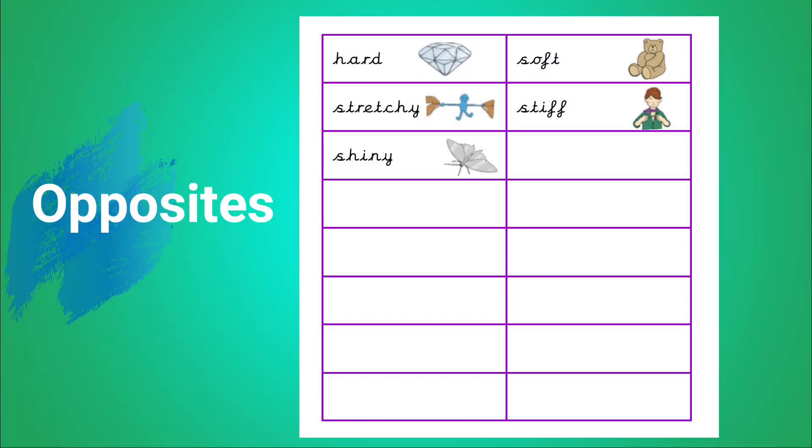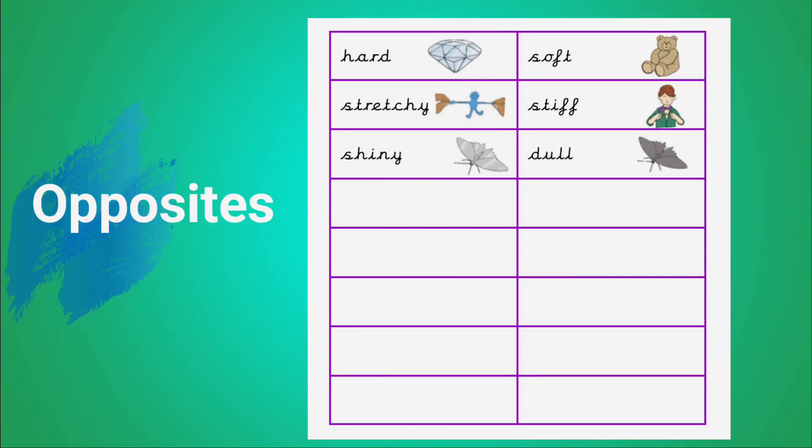Shiny. Like some tin foil. The opposite of shiny is dull. Like a grey piece of paper.